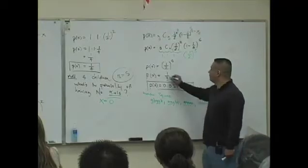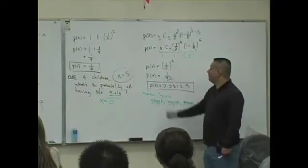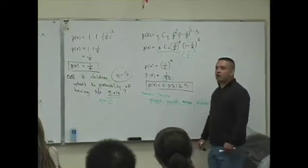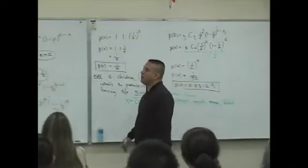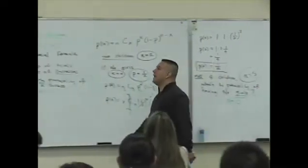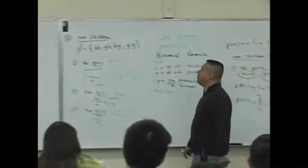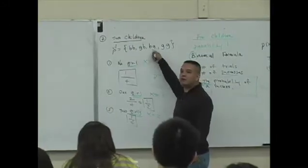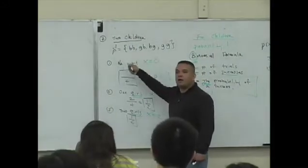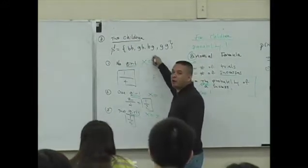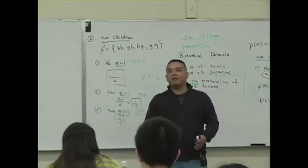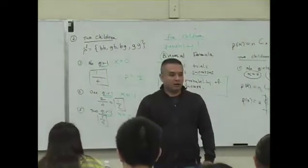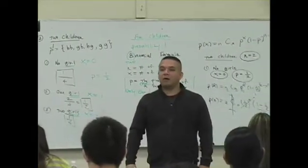How many sequences are there? 32. So if you were to do this tree diagram, maybe you did that to generate the total number of gender sequences when you had two children. Here it's four. If you did it for five, it's 32. It's really two to the fifth power.